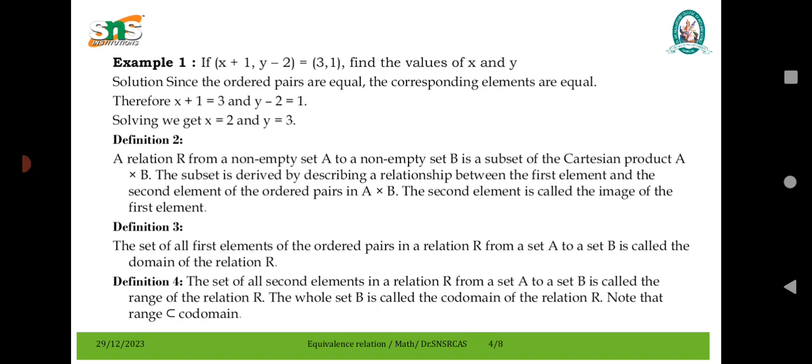The set of all elements of the ordered pairs in a relation R from A to B is called the domain of the relation. Definition 4: The set of all second elements of the R from A to B is called the range. The whole set B is the co-domain.